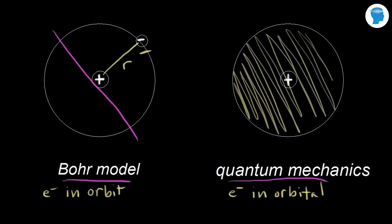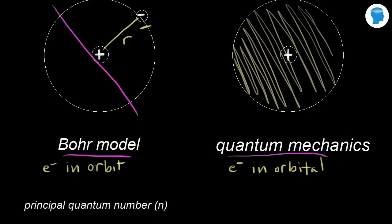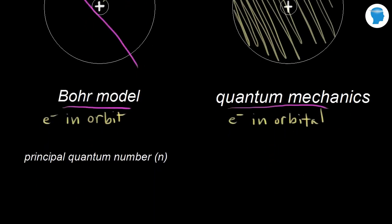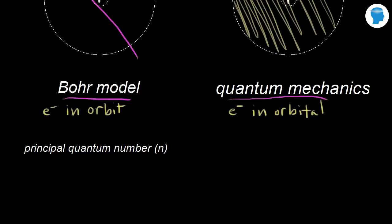We can describe electrons in orbitals using the four quantum numbers. The first is called the principal quantum number, symbolized by n. n is a positive integer — it could be one, two, three, and so on. It indicates the main energy level occupied by the electron.